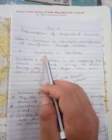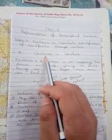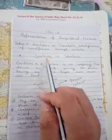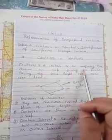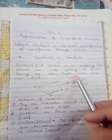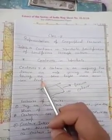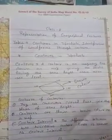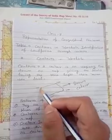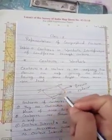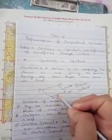I already discussed Contours in the previous lecture. A contour is an imaginary line drawn on a map joining the points having the same height above the mean sea level. That means contours represent the height above the sea level. For example, this particular place has a height of 100m above sea level, this place is also 100m, this place is also 100m — equal height places are joined by a contour line.